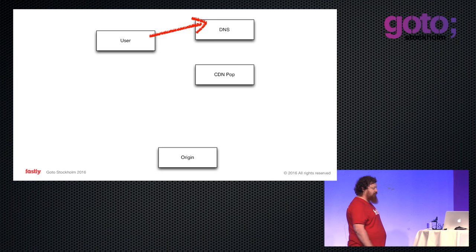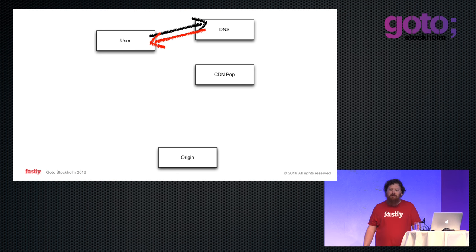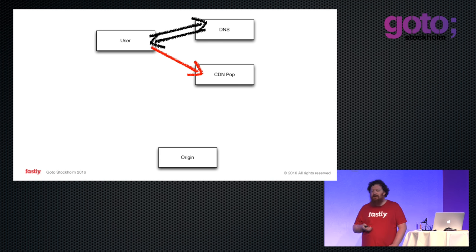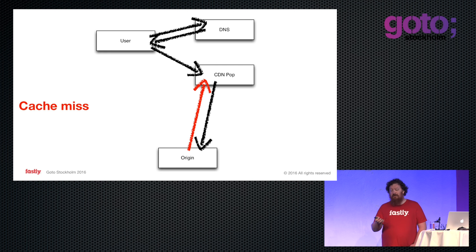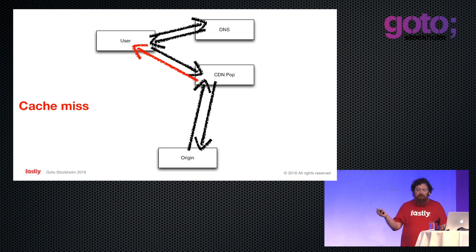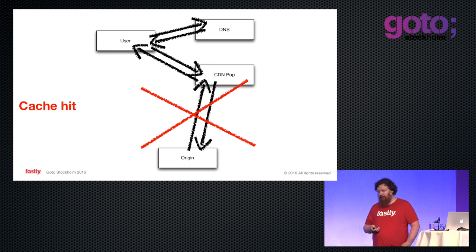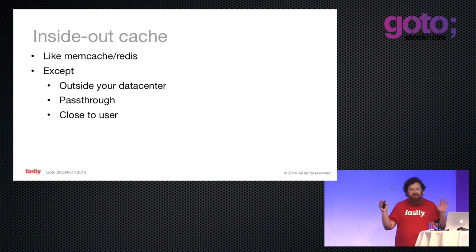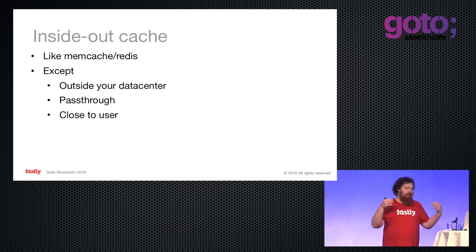So what happens when you use a CDN? You have a user. The user goes to the DNS server. The DNS server tells the user to go to a CDN pop — typically you've CNAME'd or somehow delegated that responsibility to the CDN. The CDN pop gets the request. If it doesn't have it, it goes back to origin. Origin responds with the object, we store it in the cache, and we return it to the user. And if it's cached, you don't have to go back to origin. It's basically like memcache or Redis, but outside and in a pass-through manner — we lazily fill up on demand with what the user is requesting.